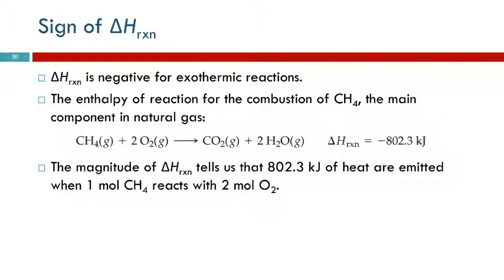Delta H is negative for exothermic reactions. If we look at this reaction, this is combustion of methane. Methane reacts with oxygen gas, forms carbon dioxide and water. That's an exothermic reaction. That's why we burn natural gas in our stove burners to give off heat to get things hot. The change in energy, the enthalpy of the reaction, is negative 802.3 kilojoules.